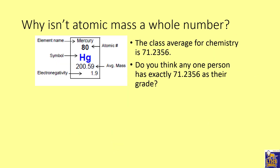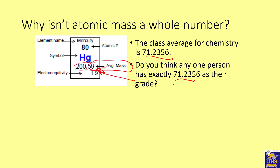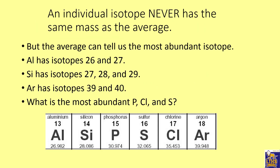The number on the periodic table is called the average atomic mass. Just like a class average of 71.2356 doesn't mean any one person scored exactly that, no single atom has exactly that mass. The average atomic mass is the average of the masses of all isotopes — but it's not a simple average, it's a weighted average, because isotopes don't all exist in equal amounts.